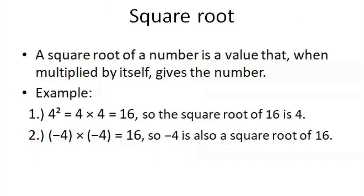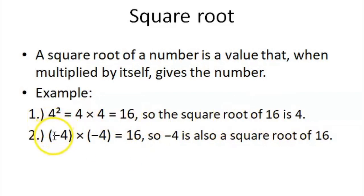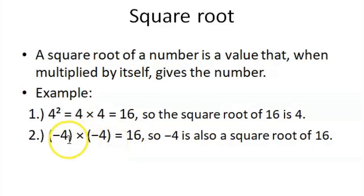Before we proceed, let us first define what a square root is. A square root of a number is a value that, when multiplied by itself, gives the number. For example, 4 squared equals 4 times 4, which gives 16. So the square root of 16 is 4. Also, negative 4 times negative 4 also equals 16, because when multiplying numbers with the same signs, the result is positive. Therefore, negative 4 is also a square root of 16.